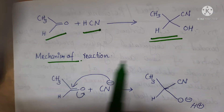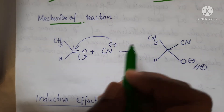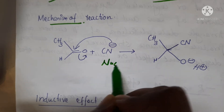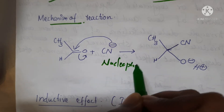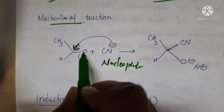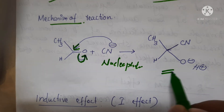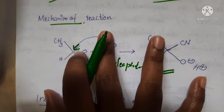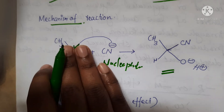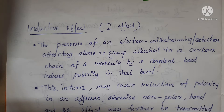In this reaction mechanism, the cyanide ion acts as the nucleophile, attacking the carbonyl carbon of the aldehyde, which is electrophilic. The aldehyde carbon is attacked by the nucleophilic cyanide, producing the cyanohydrin and CO2 minus.